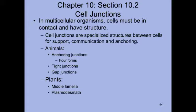That brings us to Chapter 10, Section 10.2, which covers only cell junctions. In multicellular organisms, cells are often in contact, and many cells together form organs like a kidney or liver. The structures that occur between cells, aside from an extracellular matrix, are cell junctions — specialized mainly for support, anchoring, and cellular communication. Animal cells have anchoring junctions, tight junctions, and gap junctions. Plant cells have two types: the middle lamella, used for anchoring, and the plasmodesmata, used primarily for signaling and sharing nutrients.